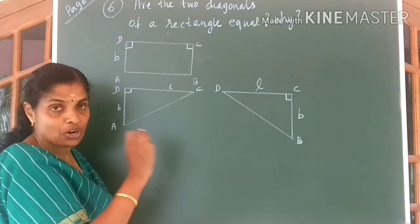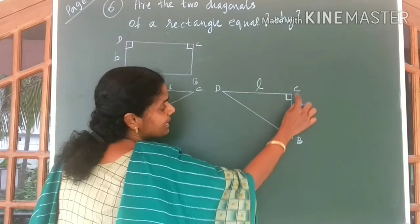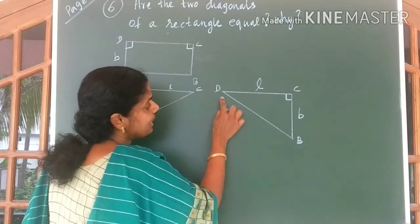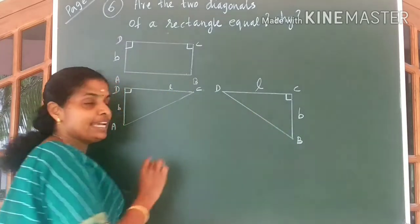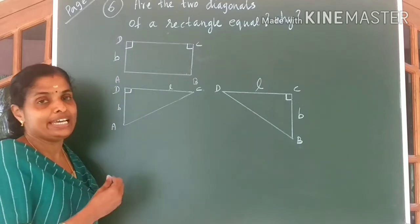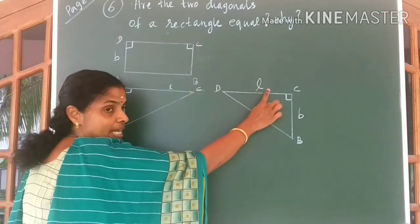This figure is got by joining again the length of the rectangle, breadth of the rectangle, and also the diagonal. Just by looking at these two figures, the idea will be very clear to you. Because side, here also side.